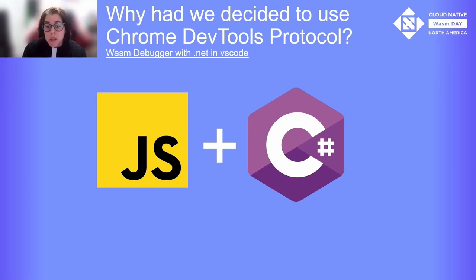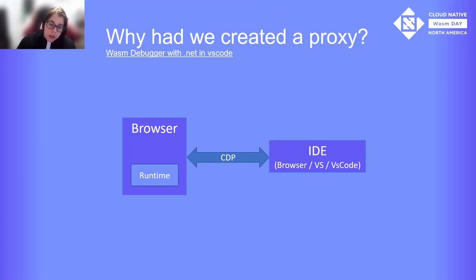Another reason is that we wanted to debug JavaScript and C# at the same time, so we decided to use CDP to communicate with the runtime, since we were primarily running WASM on Chrome. Here you can see a diagram of how the browser communicates with the IDE with remote debugging enabled. It's important to remember that the IDE can be either VS Code, VS, or DevTools from the browser itself. They communicate through a WebSocket using CDP.